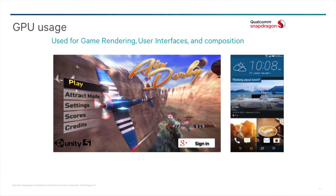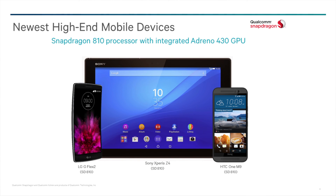We've designed the GPU to support the most advanced mobile APIs, application programming interfaces, and also to have great performance and efficiency necessary for the mobile environment, which has limited bandwidth, power, and thermal constraints. Our latest, most advanced GPU shipping is the Qualcomm Adreno 430, integrated into our Snapdragon 810 processors. With some of the newer features supported in the graphics APIs, like OpenCL, or OpenGL's compute shaders in the OpenGL 3.1 Android extension pack, the GPU can actually do general-purpose computing, also called GP-GPU.